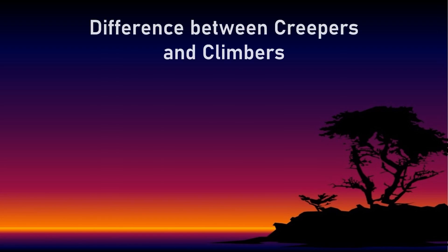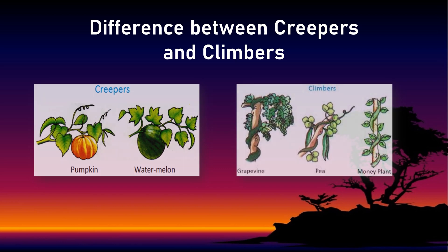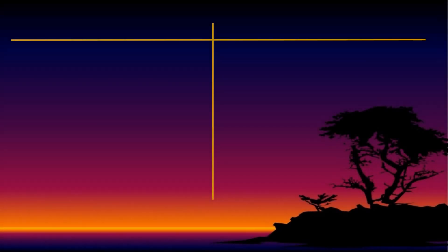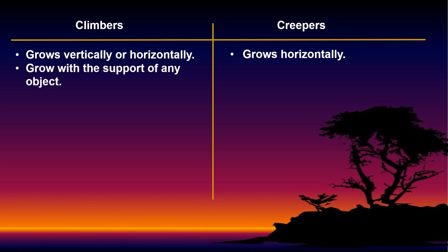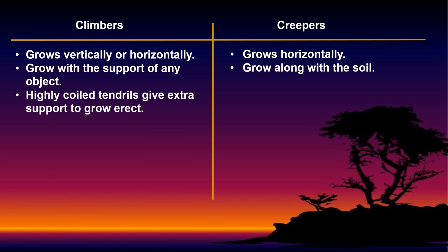There are a few major differences between climbers and creepers. Let us see now. Climbers grow vertically or horizontally, whereas creepers grow horizontally. Climbers grow with the support of any object, whereas creepers grow along the soil.